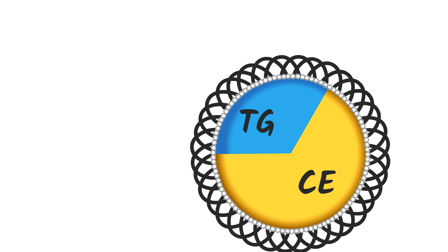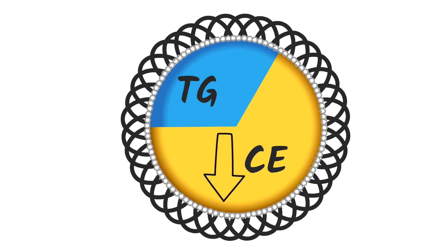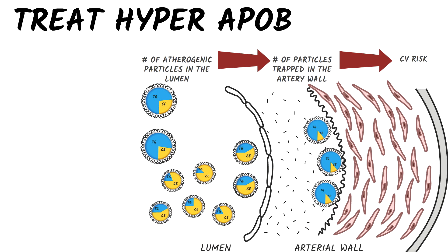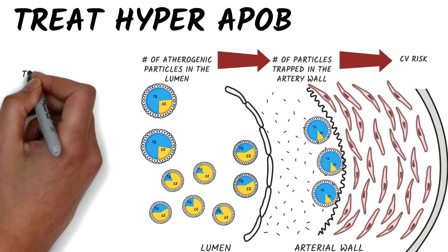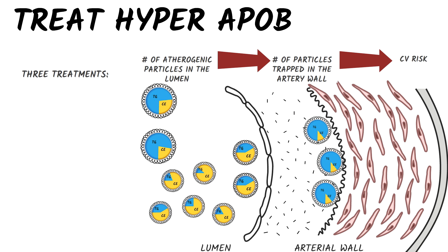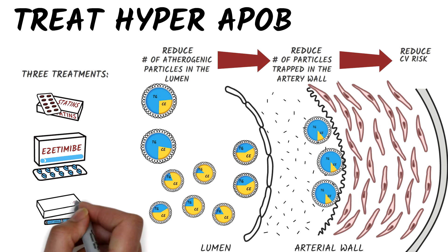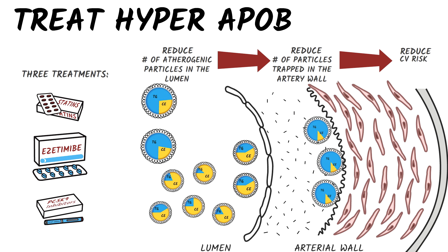Now, how do we treat hyper-ApoB? The same way we treat LDL-C, because it turns out that our treatments lower LDL-C by increasing the rate at which ApoB particles are removed from plasma. There are three treatments that lower cholesterol and ApoB by reducing the number of ApoB particles within the lumen, which reduces cardiovascular risk: statins, ezetimibe, and PCSK9 inhibitors.